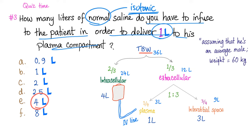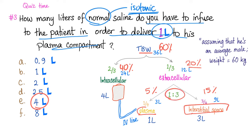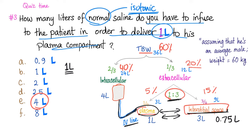Total body water is 60% of body weight: 40% intracellular, 20% extracellular. Of that 20%, 15% is interstitial and 5% is plasma. The ratio between plasma and interstitial space is 1 to 3. When you infuse 1 liter of normal saline into the IV line, it goes first to plasma but then equilibrates with the interstitial space. At a 1-to-3 ratio, 0.75 liters goes to interstitial and only 0.25 liters stays in plasma.